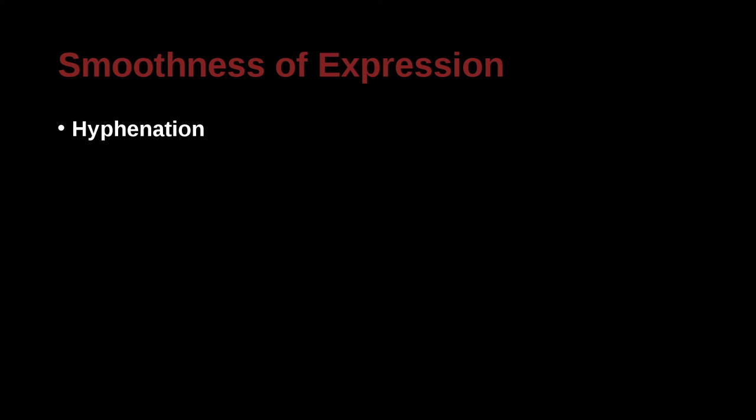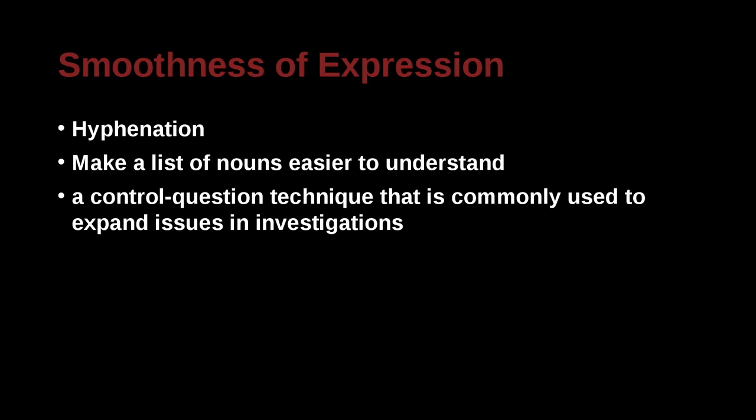One thing you can do to help your writing be smooth is use hyphenation. Hyphenation is that little dash in your keyboard. And this can be used when you have very complex or complicated words that come in a series. So for example, here we say a control hyphen question. Notice the hyphen has no space before and no space after.